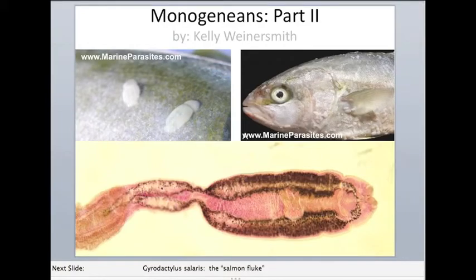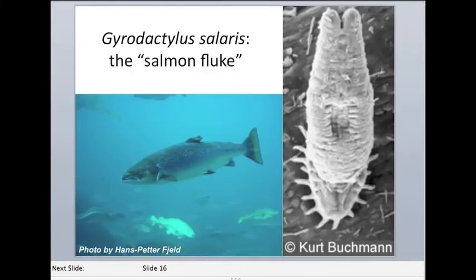Alright, back to the monogenians, part two. As I mentioned in the previous lecture, having fish in high densities really passes parasites between one another, especially if you're working with Gyrodactylus parasites, because they reproduce really quickly and their offspring can only get passed from one host to another if they're in very close proximity.